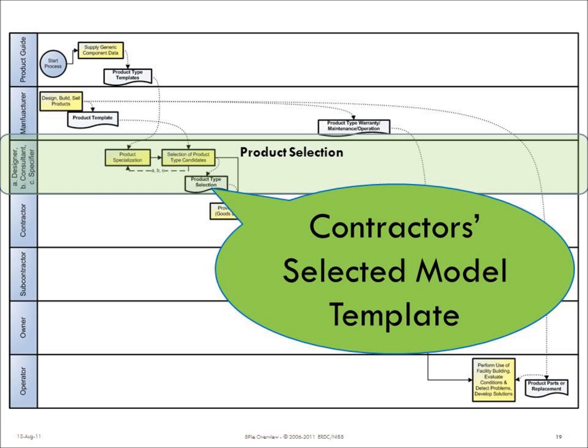Let's take a look at where we are in this example. We've gotten the product templates for each type of product, we've got the manufacturer filling out those product type templates, and we've got possibly some innovation behind that which allows us to do better searches to find those products. The designers identify those products in the design, contractors select based on that information, and suppliers provide the information and do some of their own selection. Contractors then pick the ones that are going into the building, and that information becomes part of the facility handover record delivered to the facility operator.